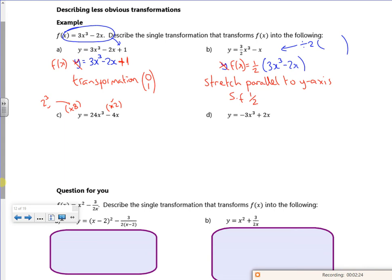So let's have a think about that. So it would be 3 lots of 2x all cubed, minus 2 lots of 2x. Does that work? So if I have the 2x all cubed, that would be an 8x cubed, times 3 is 24. So that works. Then 2 times 2 is 4. So I've replaced the x with a 2x.